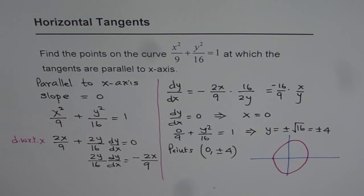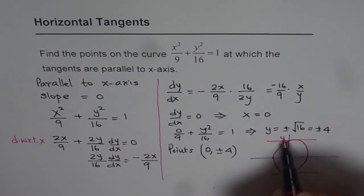Now when we're looking for horizontal tangent lines, what are we looking for? We're looking for these points. So at these points, x is 0 and the y value is ±4.